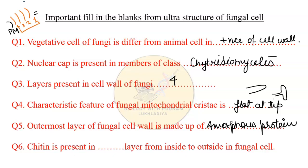This is the most important layer. The next question is: chitin is present in which layer counting from inside to outside? We count from inside to outside — one, two, three, four — and the most innermost layer is chitin. So chitin is in the first layer.